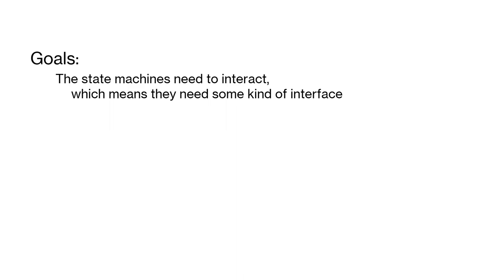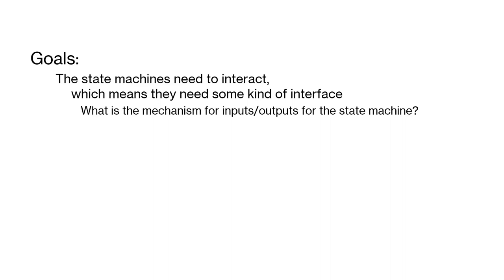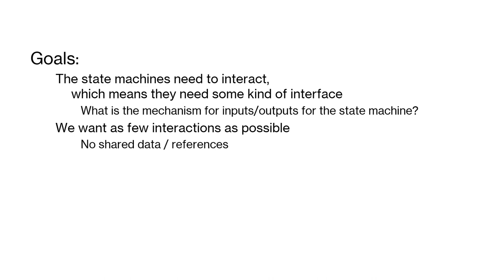Our goals for interacting state machines: they need some kind of interface — inputs and outputs between them. The mechanism used so far in C was the input event passed as a parameter to a function call into an object, which is the classic C way of doing pseudo-object-oriented programming. We want as few interactions as possible, no shared data, and no shared references — because references refer to data, so get rid of those pointers. And preferably no synchronization — we want our local state machine to interact with the outside world without needing to worry about what state the outside world is in.